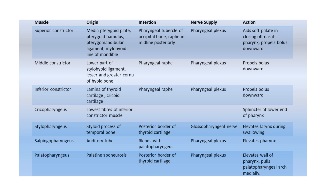Cricopharyngeus originates from the lower fibers of the inferior constrictor muscles. Action: sphincter at the lower end of the pharynx. Stylopharyngeus, which is in the internal layer, originates from the styloid process of the temporal bone. Insertion: posterior border of the thyroid cartilage. Nerve supply: glossopharyngeal nerve. Action: elevates the larynx during swallowing. Salpingopharyngeus: origin is the auditory tube. Insertion: blends with palatopharyngeus. Nerve supply: pharyngeal plexus. Action: elevates the pharynx. Palatopharyngeus: origin is the palatine aponeurosis. Insertion: posterior border of the thyroid cartilage. Nerve supply: pharyngeal plexus. Action: elevates the wall of the pharynx and pulls the palatopharyngeal arch medially.